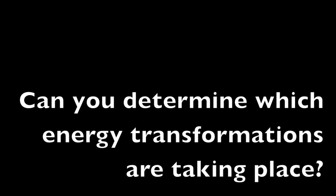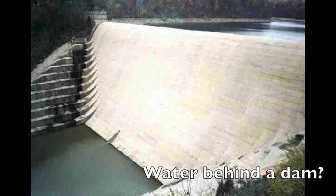Can you determine which energy transformations are taking place? For example, water flows downstream and stops at a dam. That would be an example of kinetic to potential energy. The water was moving, which is kinetic, and it stops at the dam, which is potential. However, it could overflow at any time, which would make it kinetic energy again.